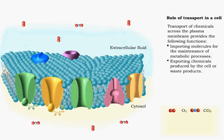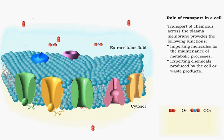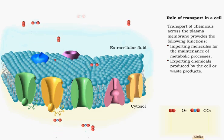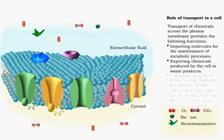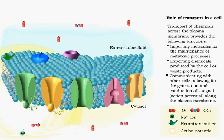Others, like carbon dioxide, are exported as the cell produces them. Communication occurs between cells when substances produced by one cell, such as neurotransmitters, induce the transport of chemicals across the plasma membrane of another cell, making the generation of an action potential possible.